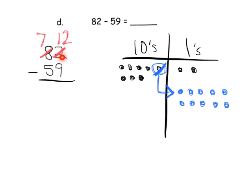Now we have enough ones to take away the 9. So 12 take away 9 — I'm going to count on my fingers, start with 9 and go 10, 11, 12 — so that's 3. And then in our tens column, we have 7 tens, take away 5 tens. Start with 5, 6, 7 — so that's 2 tens. So our answer is 23.